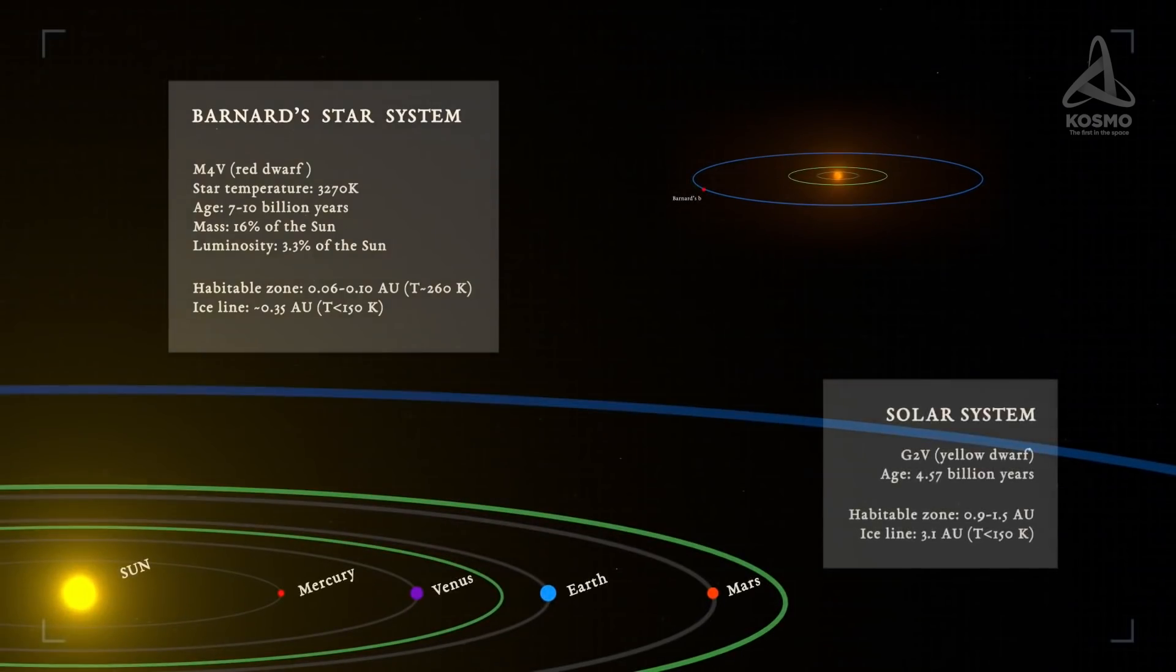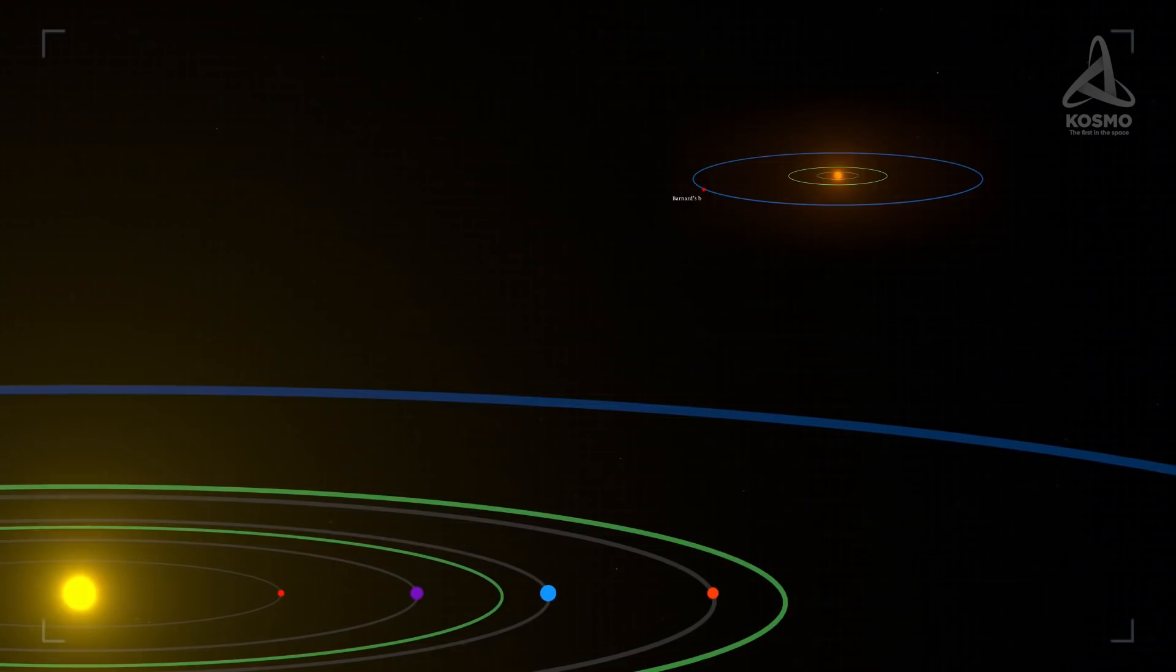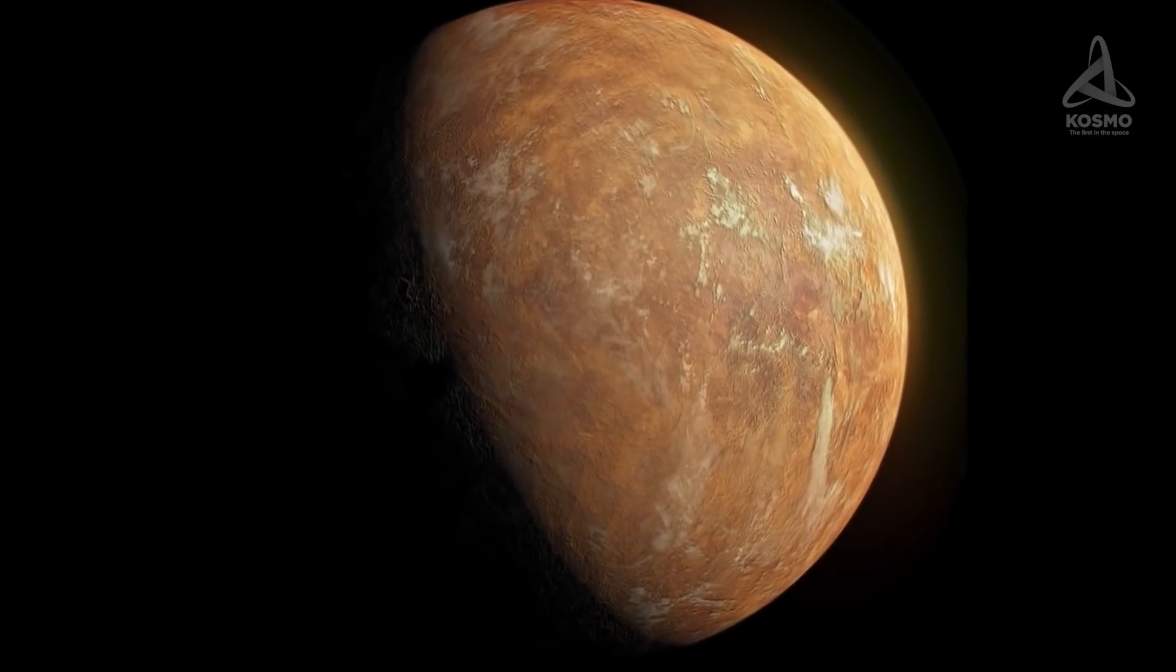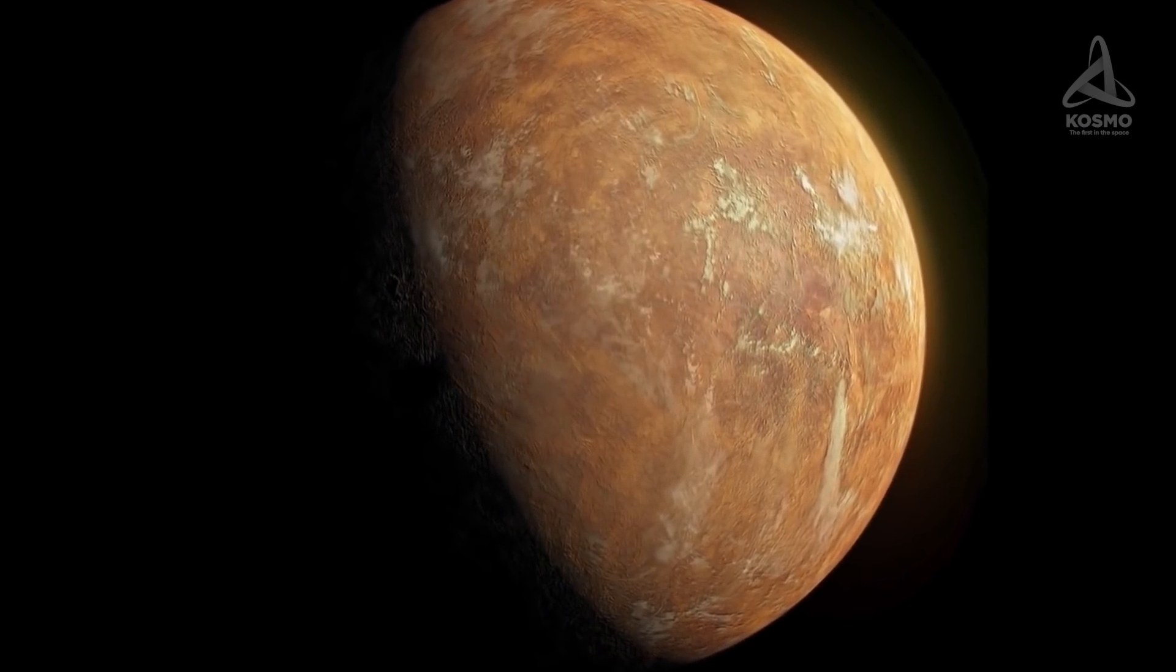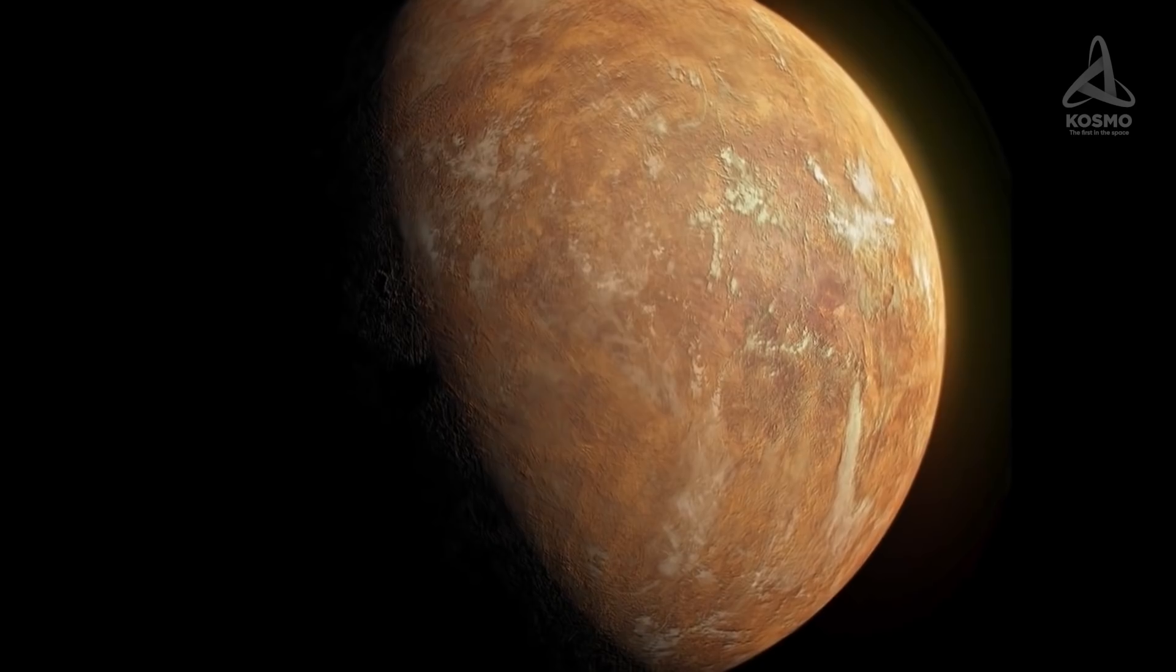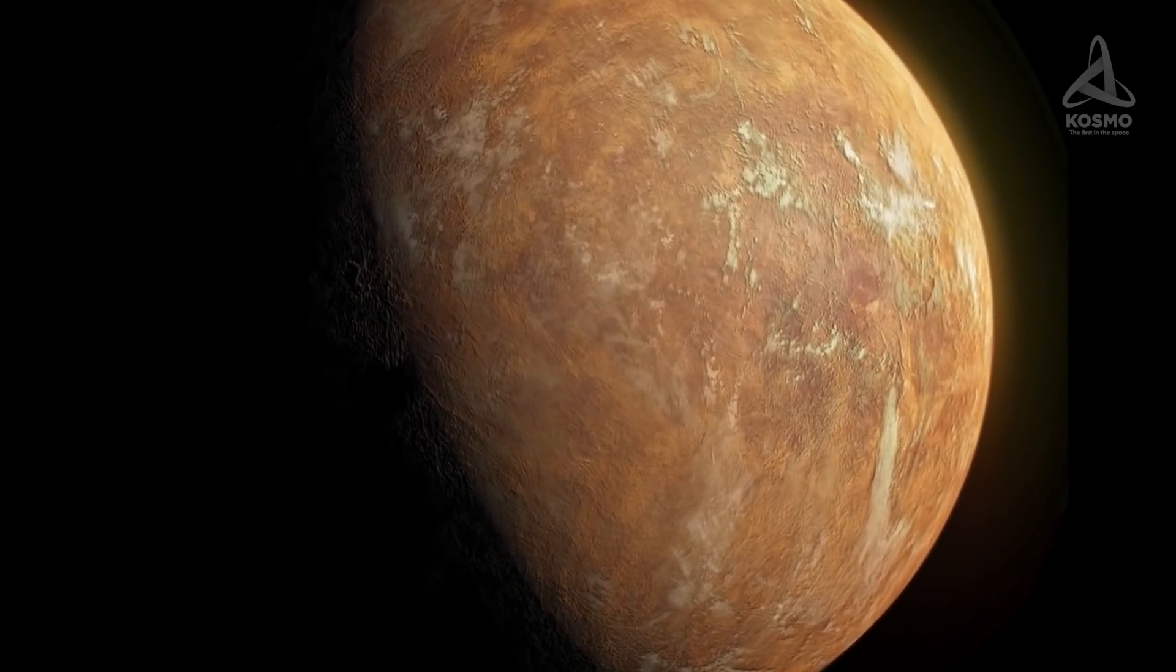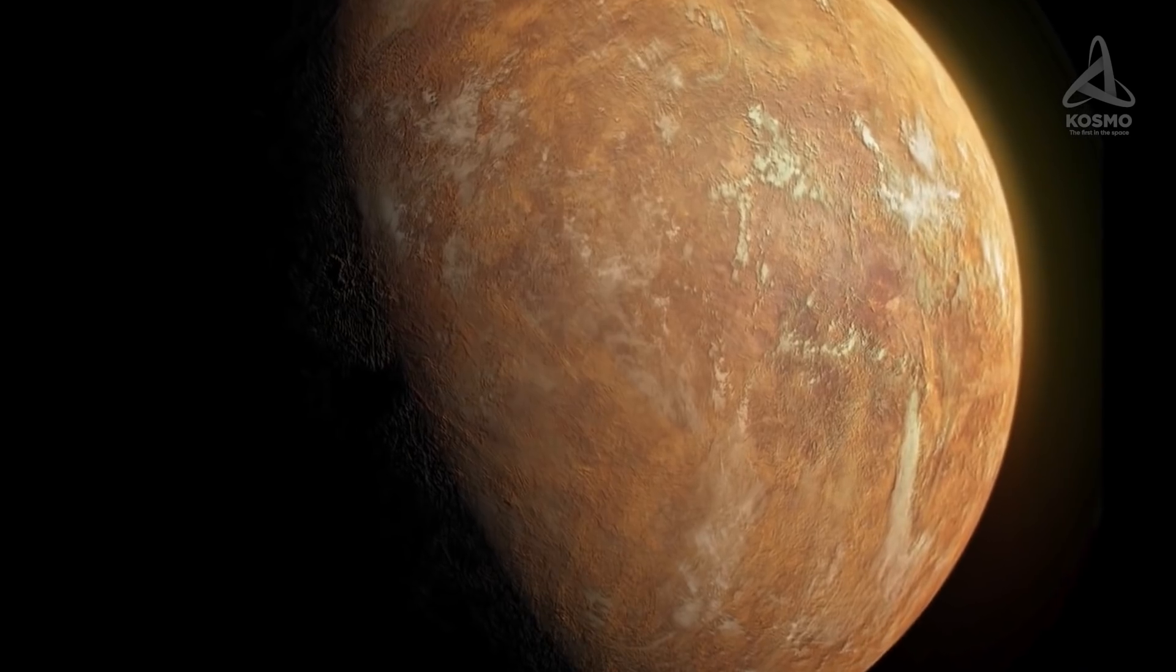The color of the star is the direct indicator of the temperature on its surface, just like a metal rod, which when heated first turns red, then orange, after that yellow, then white, and finally blue. For decades, Californian scientists have been making great efforts to discover planets in the vicinity of Barnard's star, but so far there are no data as to their existence.